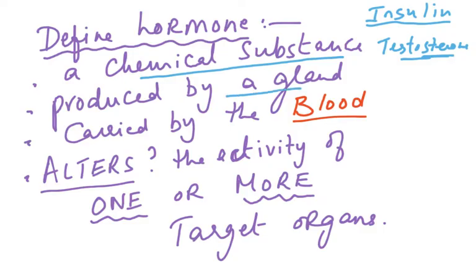Hormones are produced by a gland, and these glands are called endocrine glands — why? Because these are called ductless glands; they don't have a duct. Salivary glands have a duct, the pancreas has a duct, sweat glands have a duct. But endocrine glands don't have a duct because they throw their secretions — whatever chemical substance they produce — directly into the bloodstream, and it is carried by the blood.